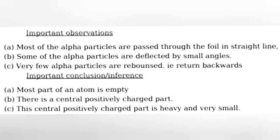Important observations: Most of the alpha particles passed through the foil in straight line. Some of the alpha particles are deflected by small angles. Very few alpha particles are rebounced, i.e. returned backwards.